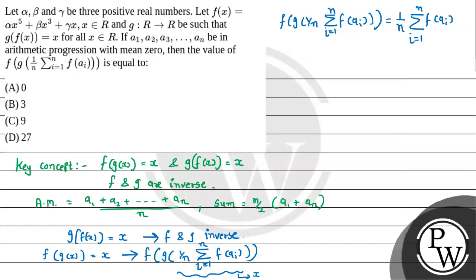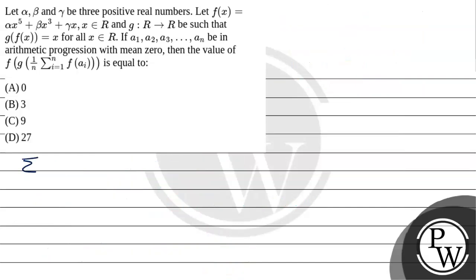We have f(x) = αx⁵ + βx³ + γx, which implies f(aᵢ) = αaᵢ⁵ + βaᵢ³ + γaᵢ. Therefore the summation Σᵢ₌₁ⁿ f(aᵢ) = (αa₁⁵ + βa₁³ + γa₁) + (αa₂⁵ + βa₂³ + γa₂) + ... This is equation 1.